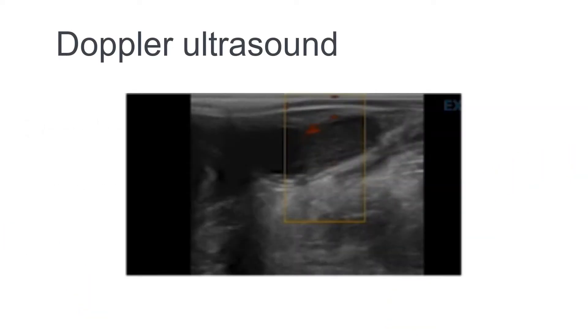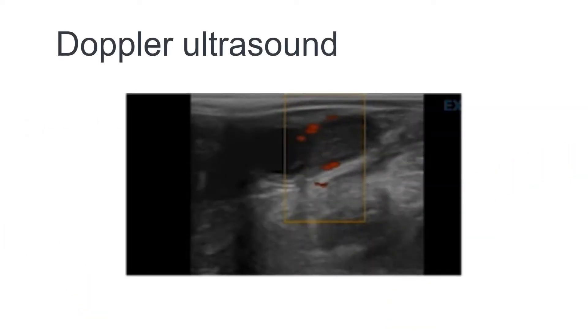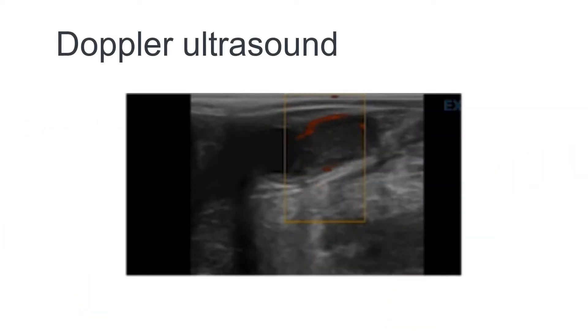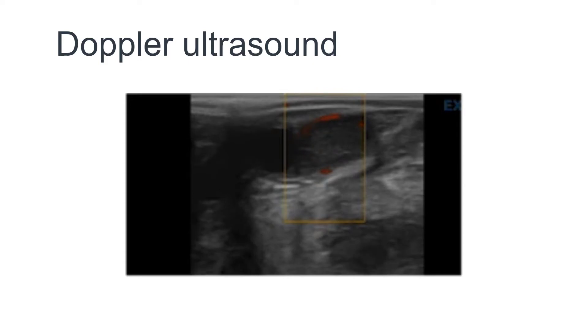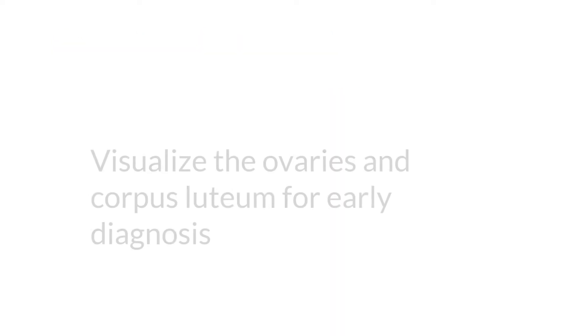Doppler ultrasound, as its name implies, uses the Doppler effect to measure the velocity of a liquid flow — and in this case, the blood flow in the CL.